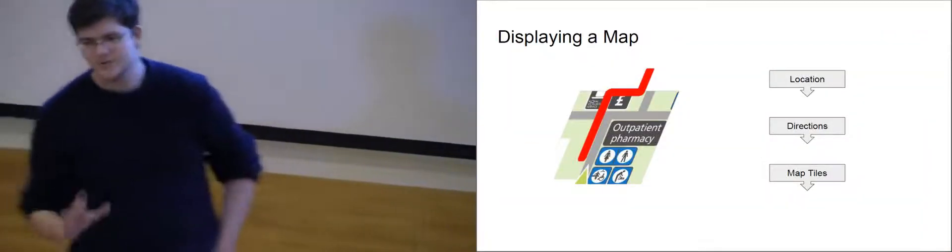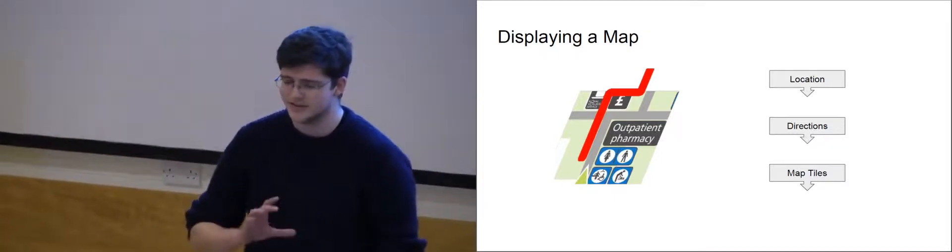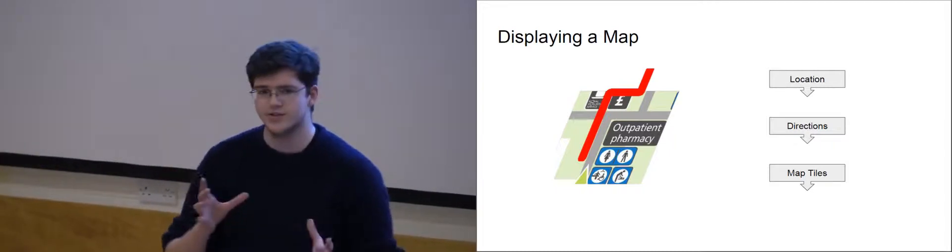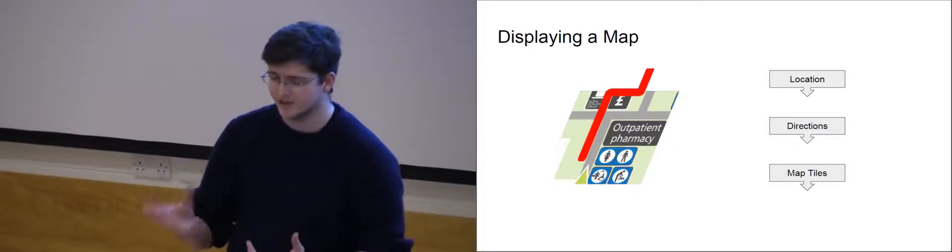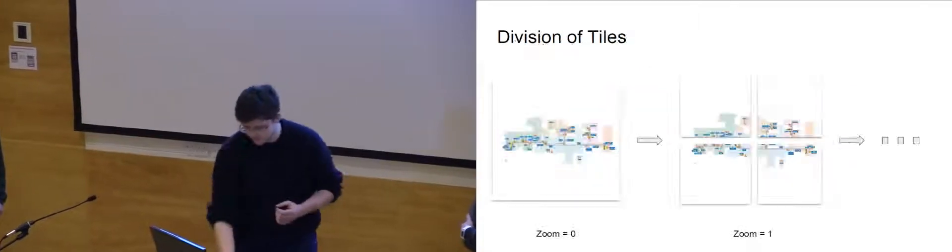Now, how do we display the map? So to display the map, we're using the Google Maps API for Android. And essentially, we have three overlays over a blank map. We have location and directions, which are both we render on the fly. And then we have the map tiles, which are all pre-rendered.